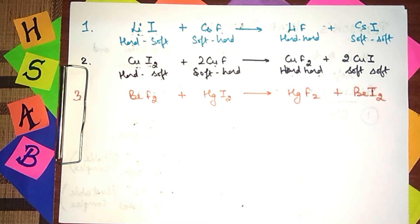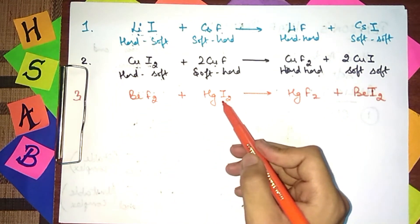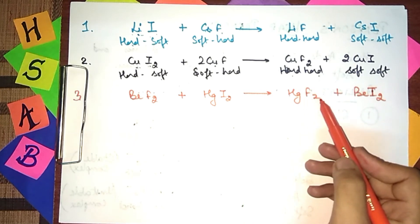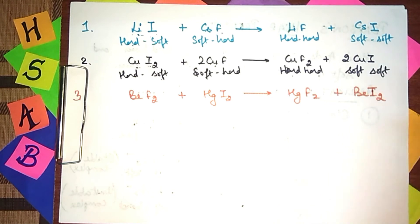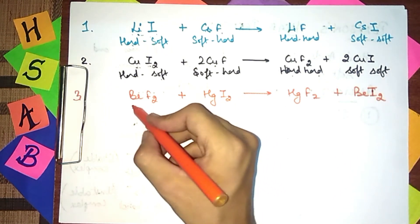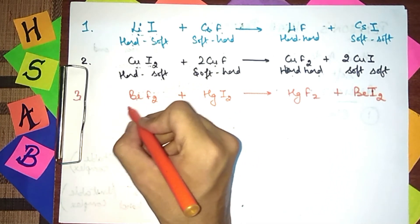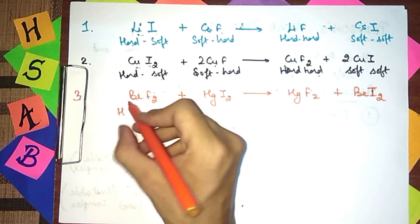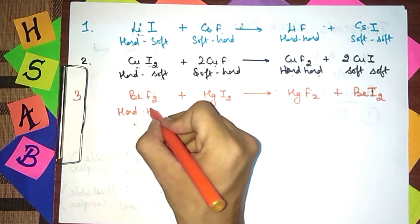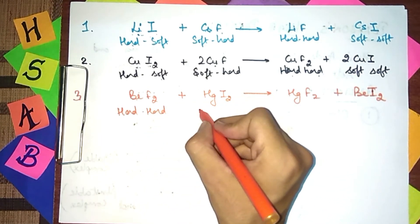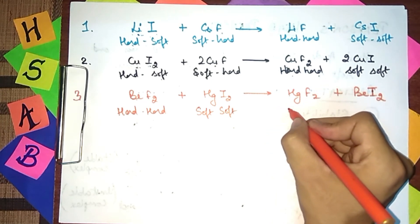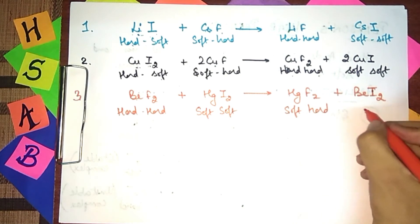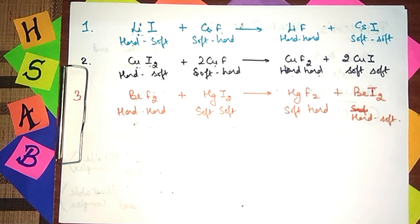Now the third example involves: beryllium difluoride (BeF₂) + mercuric iodide (HgI₂) → mercuric fluoride (HgF₂) + beryllium diiodide (BeI₂). Will this reaction be favored? Beryllium (Be²⁺) is an alkaline earth metal, so it is a hard acid. Fluoride ion is hard. Hg²⁺ is a soft acid, and iodide is a soft base — so in the reactants, Hg²⁺ is combined with I⁻ (soft-soft), which is unstable? No — soft-soft is stable. The reactants here are forming soft-hard and hard-soft complexes — these are unstable.